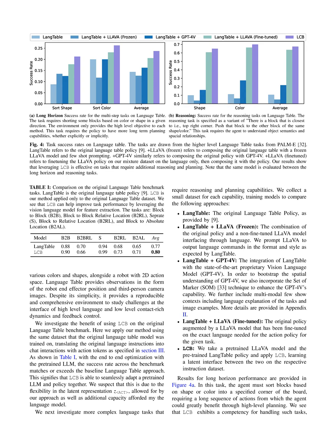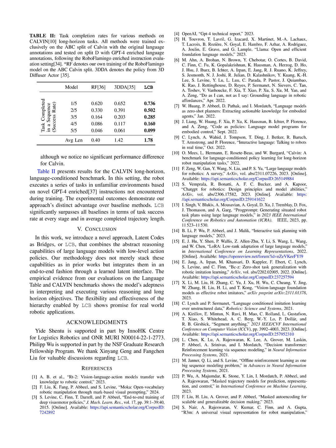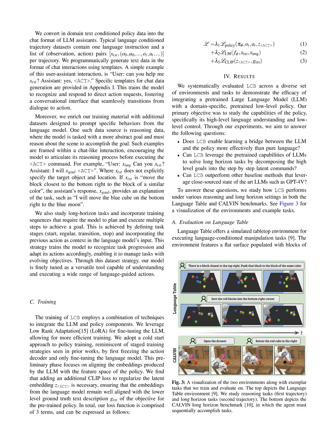The evaluation is conducted in both the Language Table and Calvin benchmarks, where LCB is compared against various baselines including the original Language Table policy, Lang Table plus LLAVA frozen, Lang Table plus GPT-4V, Lang Table plus LLAVA fine-tuned, and other approaches specific to Calvin like RoboFlamingo and 3D Diffusion Actor. The evaluation includes tasks that require reasoning, planning, and long-horizon actions, with results presented in figures and tables showcasing success rates, trajectory lengths, and performance comparisons.